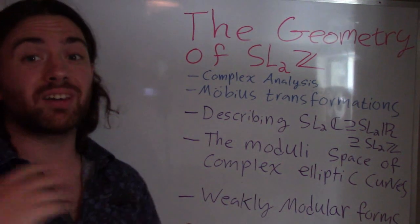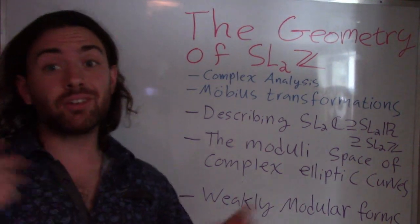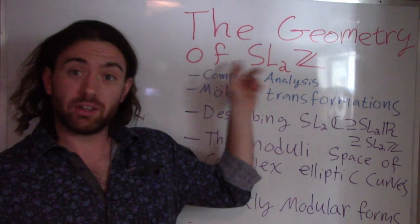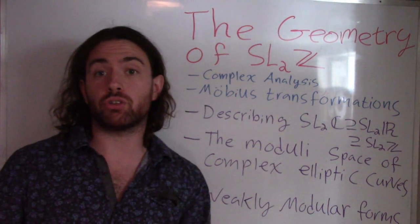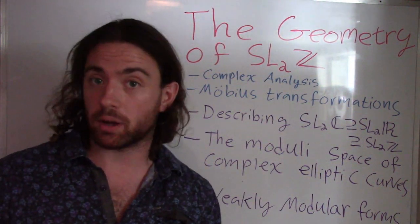So today I want to talk about something I find really interesting, that is the geometry of the group SL2Z, that is the 2 by 2 integer value matrices whose determinant is equal to 1.